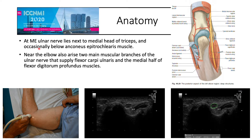At the medial epicondyle, the ulnar nerve lies next to the medial head of triceps and occasionally below the anconeus epitrochlearis muscle, which can be seen in this proportion of patients. Near the elbow also arise the two main muscular branches of the ulnar nerve, supplying the flexor carpi ulnaris and the medial half of the flexor digitorum profundus muscles. This is the medial epicondyle, this is the triceps muscle, this is the ulnar nerve, and this is where we typically measure the cross-sectional area.